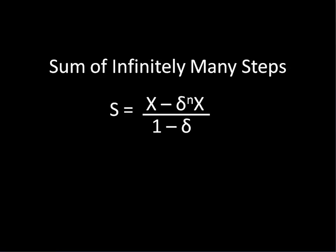But that is just n steps. To get infinitely many steps, we have to take the limit as n approaches infinity. Fortunately, n only appears in one place in this equation, so we only have to analyze what discount to the n times x is in the limit.